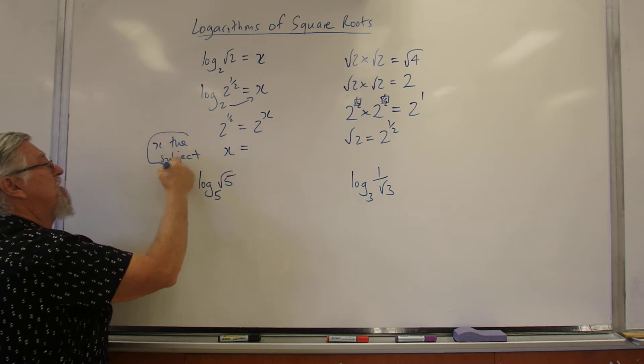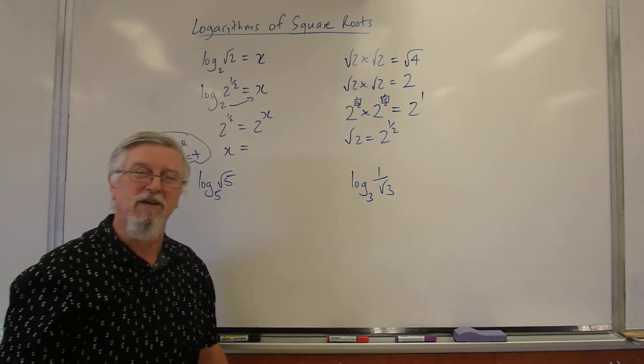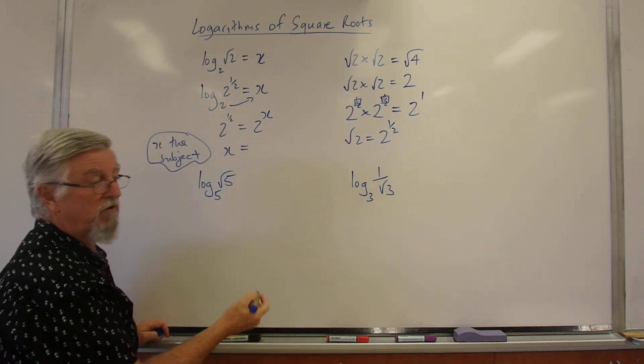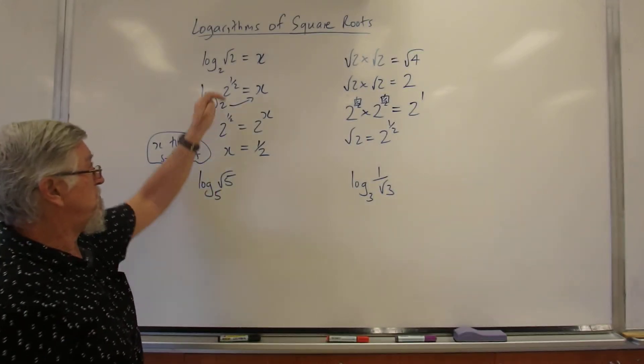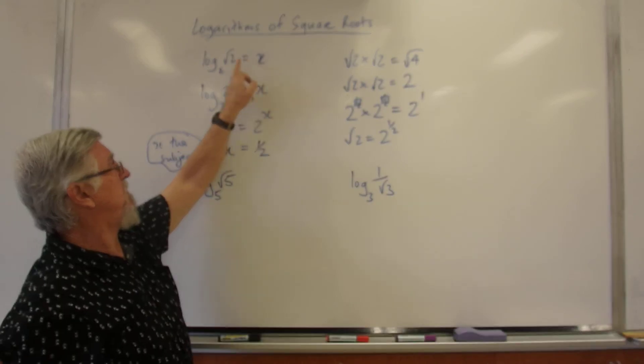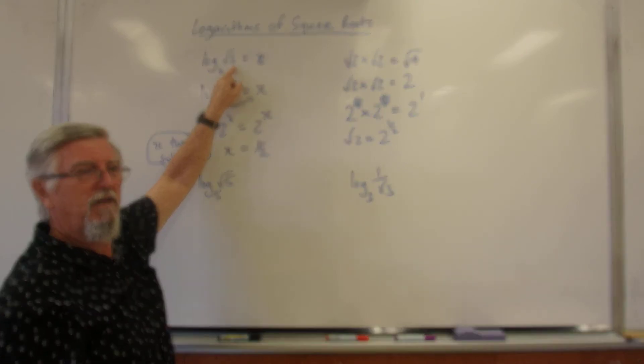When I was at school, it was a big fuss. You have to write x as a subject, otherwise you lost marks. Not always the case these days. So we've got x equals a half. So if I go back to the original question, I can just say 2 to the what is the square root of 2, and I know it's a half.